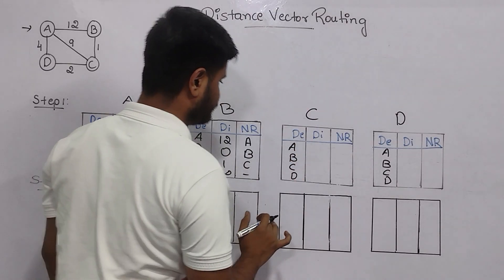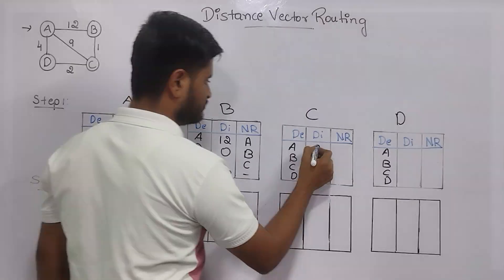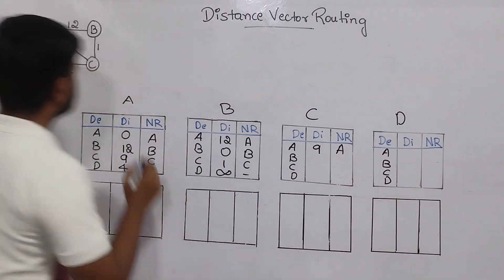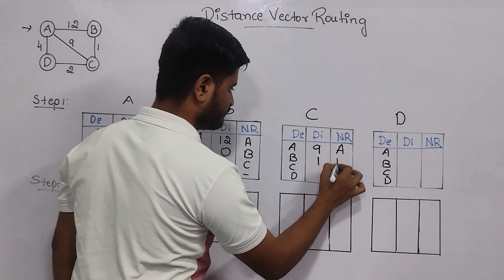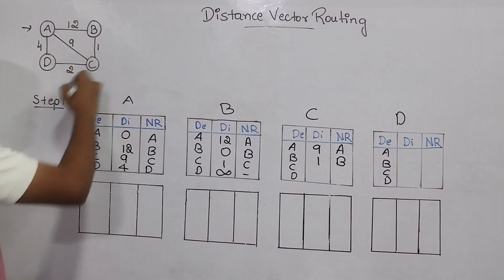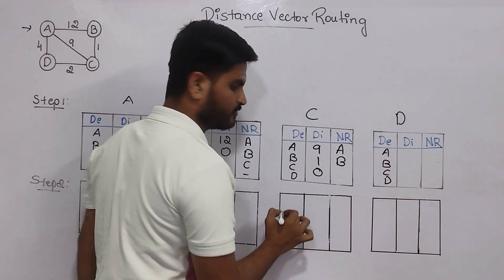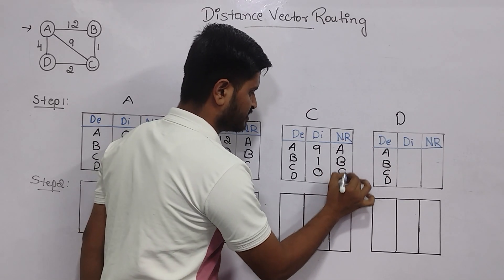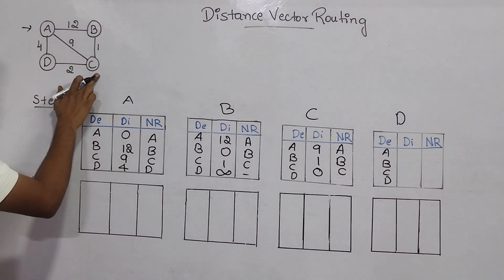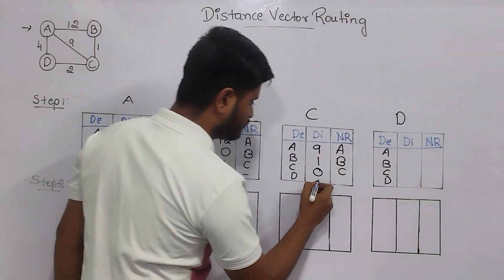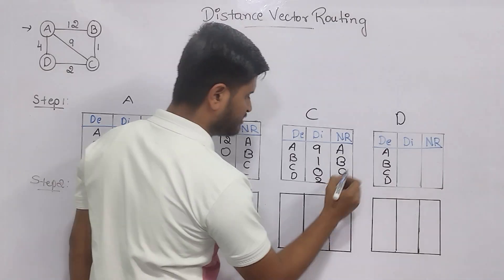Let's move to the C router. From C to A, you can go with distance 9. From C to B, you move with distance 1. From C to C, there is no cost, so the distance value will be 0 and you remain at C. Now from C to D, the value is 2 — distance is 2 — and you are at D.